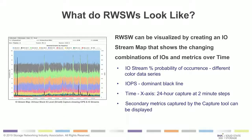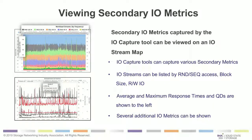You're going to be able to look at different IOs over the x-axis of this 24-hour capture, and also look at secondary metrics coming into the IO capture display. The capture tools can show you IO streams listed by random or sequential access, by block size, by IO type. We can look at average and maximum response time, different queue depths, and several other metrics as well.